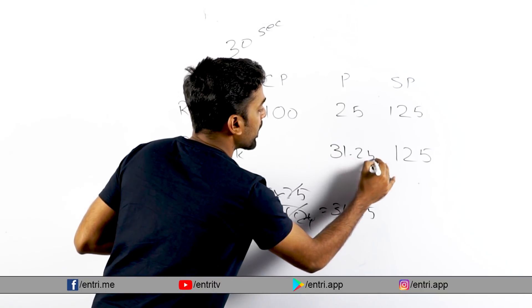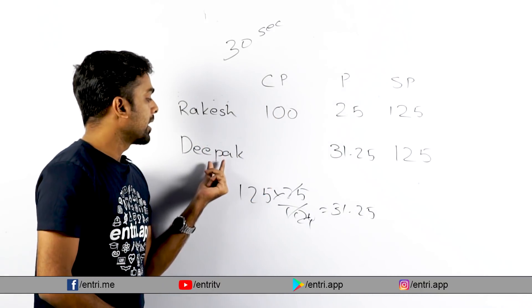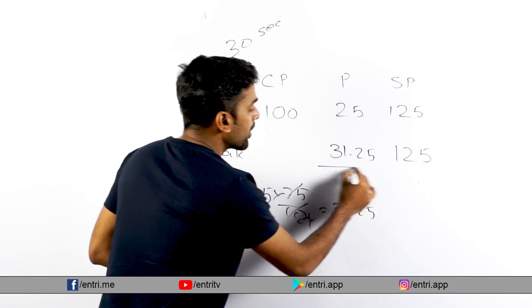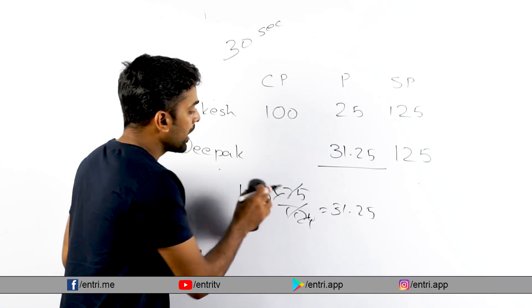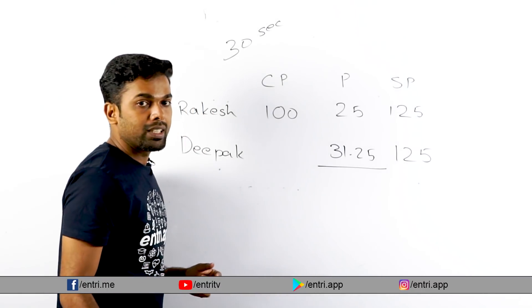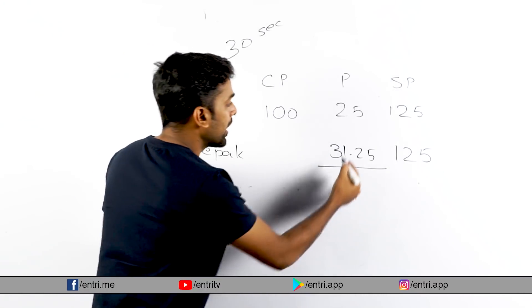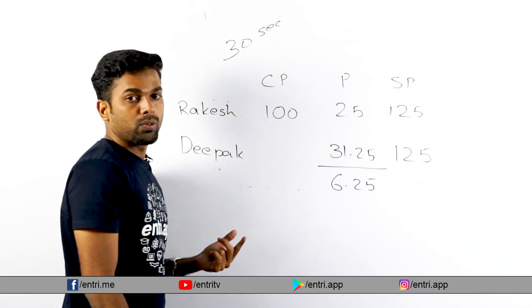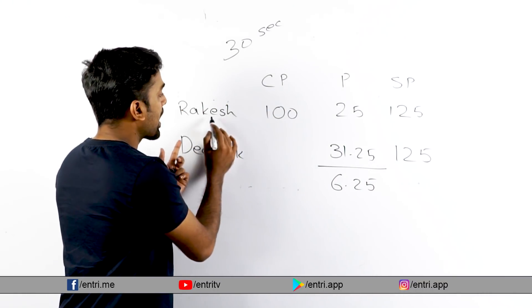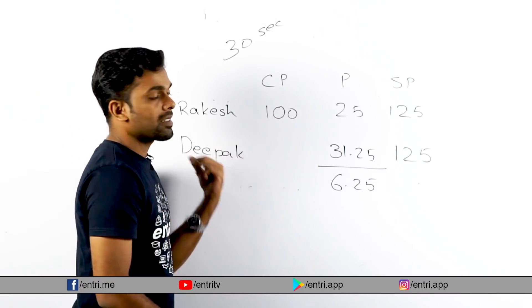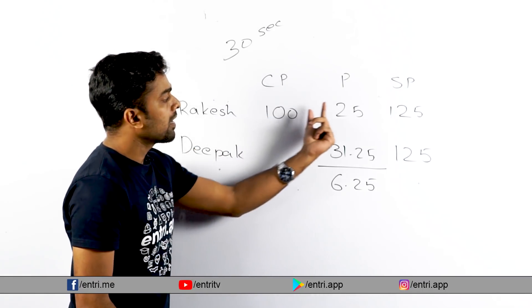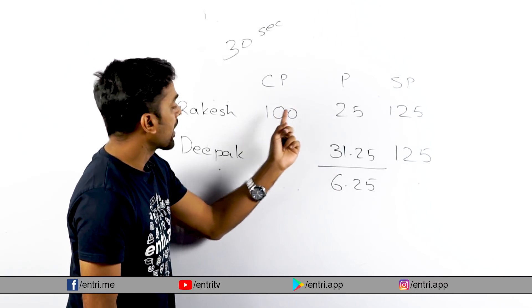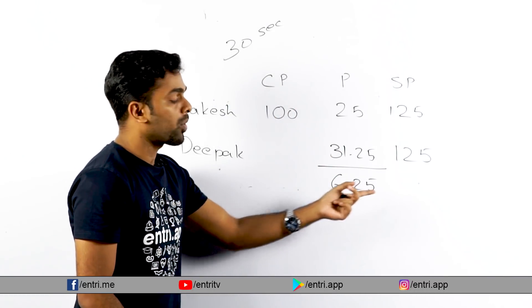What is the profit for Deebak on a selling price of 125? The profit difference between these two is: Deebak's profit 31.25 minus Rakesh's profit 25 = 6.25. So the profit difference is 6.25.